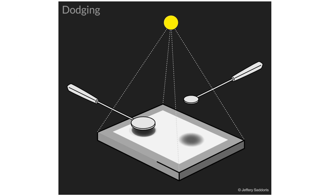Dodging does the opposite of burning — it lightens certain areas of an image. In the darkroom this was done by holding a piece of card or paper attached to a thin handle to block light from hitting a certain area of the print, thereby brightening that part of the picture. In darkroom printing from a negative, if you're printing from a positive you'd use the burning and dodging techniques the opposite way round.